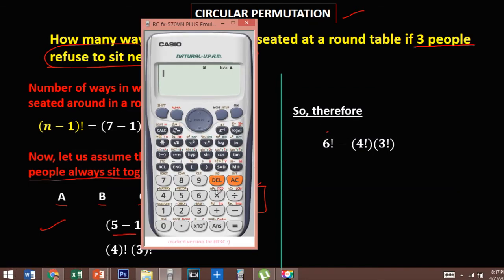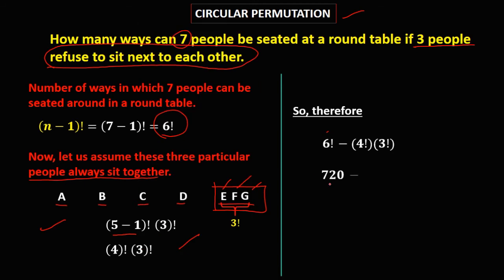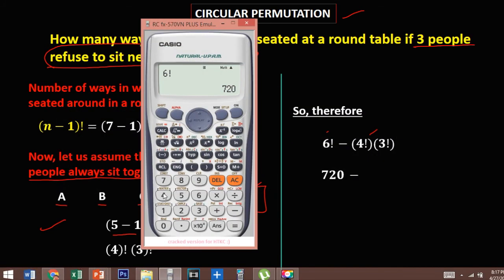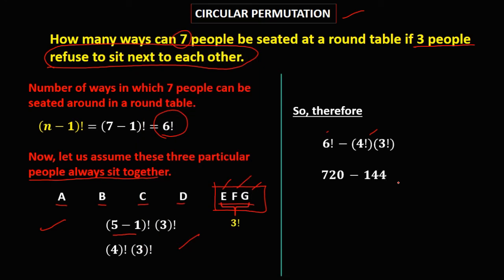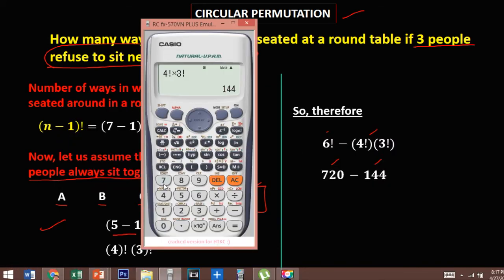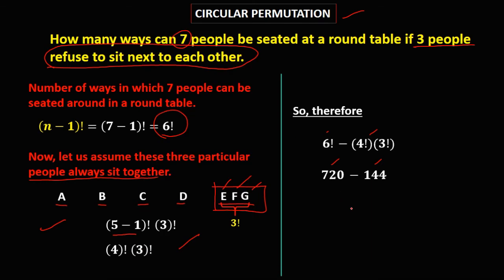To solve for the value, 6! is 720, and 4! times 3! is 144. Then 720 minus 144 equals 576.